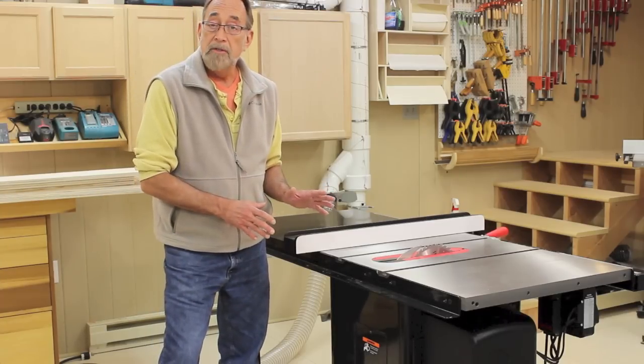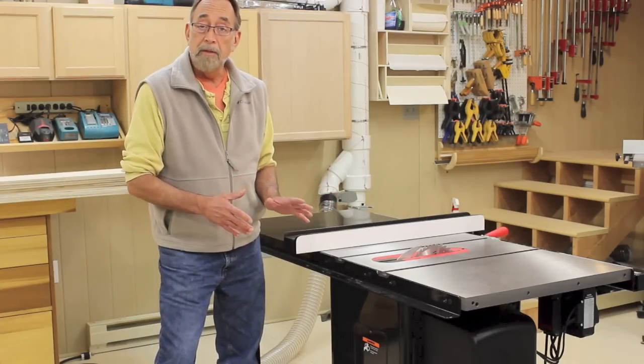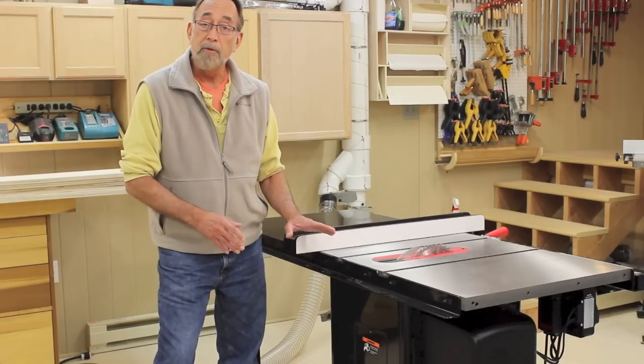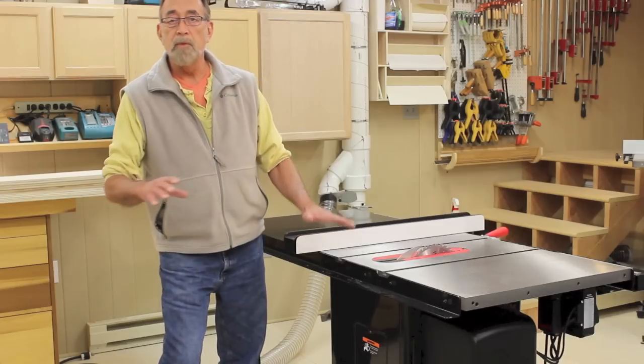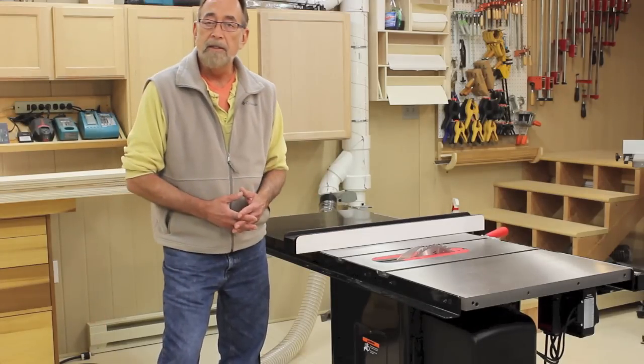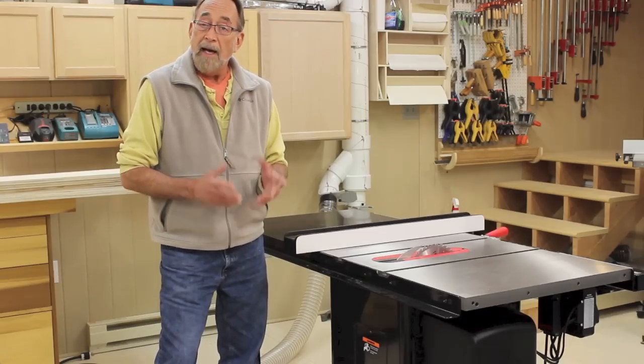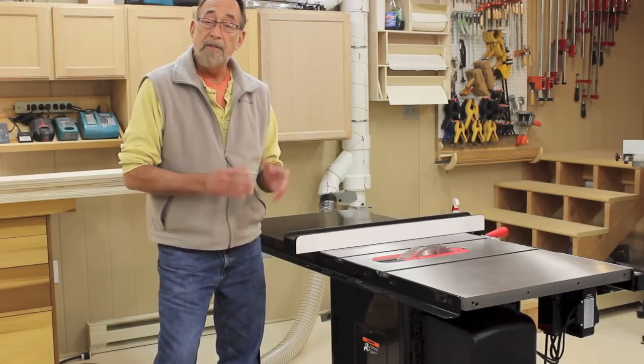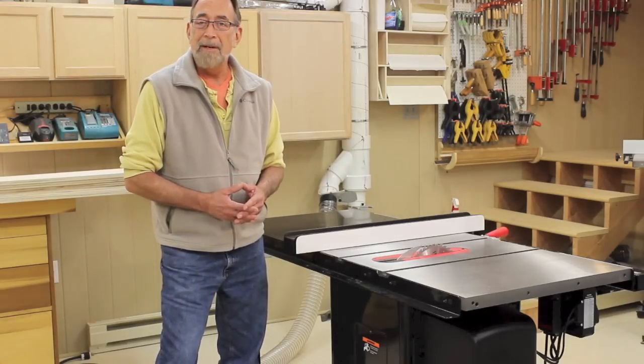Cabinet saws don't have that. Typically, people will build an outfeed table for their table saw to accomplish just that. Be able to run long boards without them pivoting off the end of the table saw. It's safer and much more convenient. I'd like to build an outfeed table that would double as an assembly and glue-up table. So let's see what that might look like.